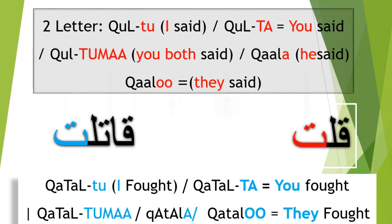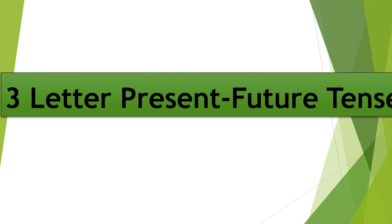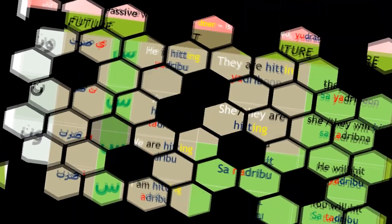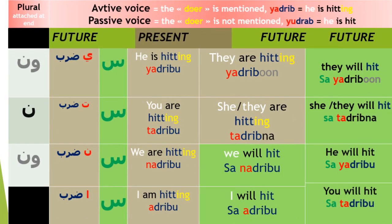Three-letter present tense: يضرب — He is hitting. تضرب — You are hitting. نضرب — We are hitting. أضرب — I am hitting. يضربون — They are hitting (male). تضربن — They are hitting (female). In future tense: سأضرب — I will hit. ستضرب — You will hit. سنضرب — We will hit. سيضربون — They will hit (male). ستضربن — They will hit (female). سيضرب — He will hit.